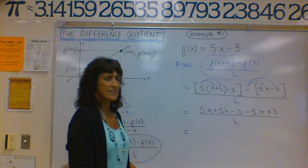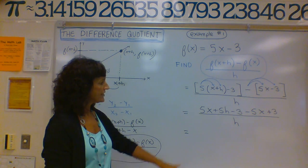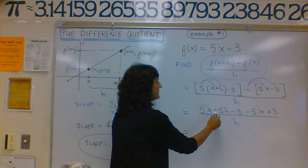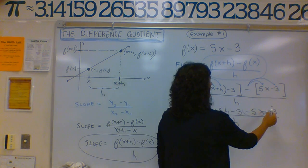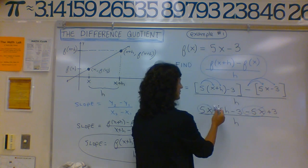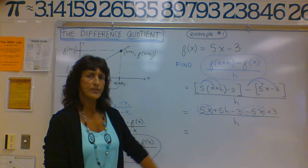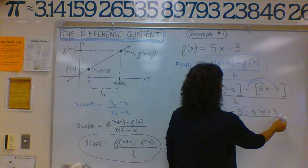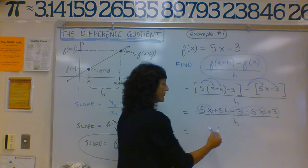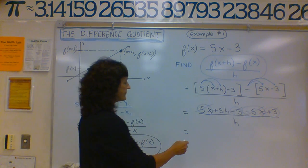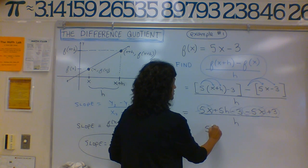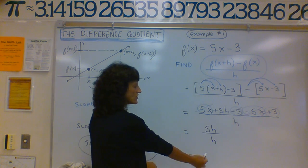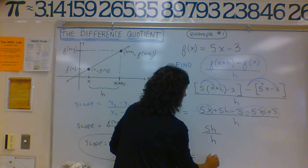Next, we collect like terms. We expand to get 5x plus 5h minus 3 minus 5x plus 3, all over h. The 5x's cancel, and the 3's cancel. We're left with 5h in the numerator and h in the denominator. The h's cancel, so our final answer is 5.